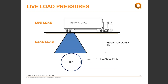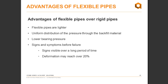Increasing the height of cover will increase the dead load but will also dissipate the live load through the backfill. This means with heavy construction equipment, we might want to increase the cover during construction. Flexible pipes offer many advantages over rigid pipes: they are less than 10% the weight per meter of concrete pipes, providing easier handling and faster installation. They also offer uniform distribution of pressure through the backfill, resulting in lower bearing pressure. One of the greatest advantages is that signs and symptoms may be visible over a long period of time before pipe collapse — pipe deformation may reach over 20% without failure.